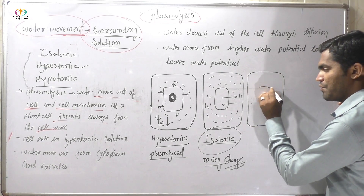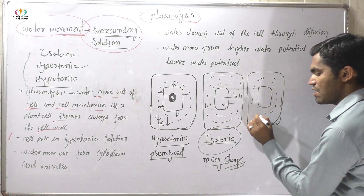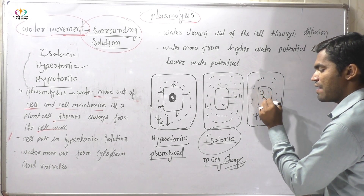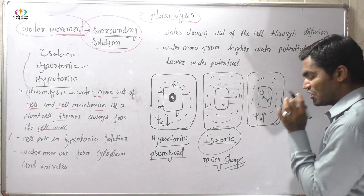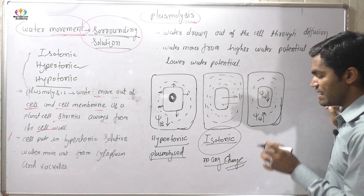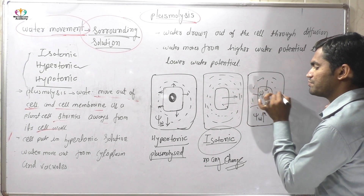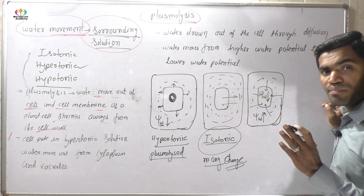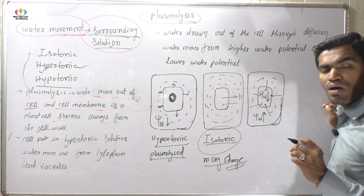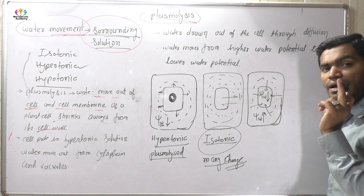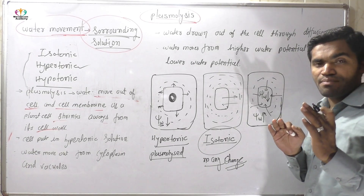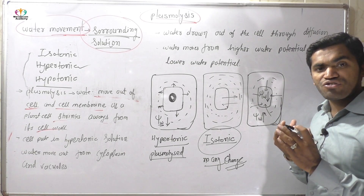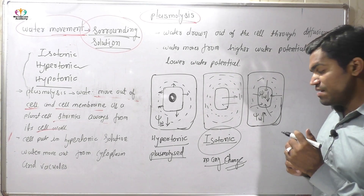When the cell is put in a hypotonic solution, the water potential is higher in the solution but lower in the cell cytoplasm. Because of the water potential gradient, water comes inside the cell. The water potential inside increases, and the cell membrane exerts force on the cell wall. The gap between the cell membrane and cell wall decreases as the cell membrane attaches to the cell wall, and the cell wall experiences turgor pressure — the cell becomes turgid.